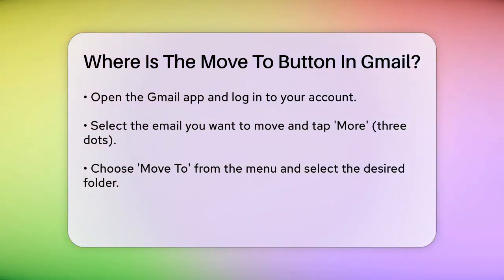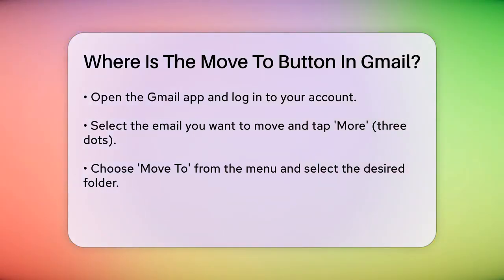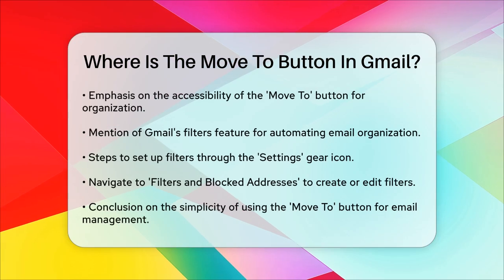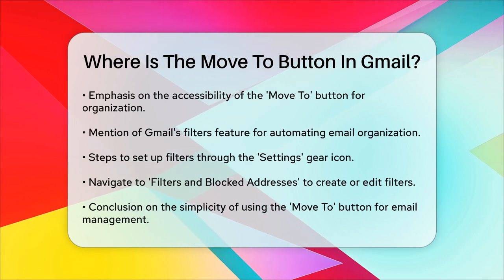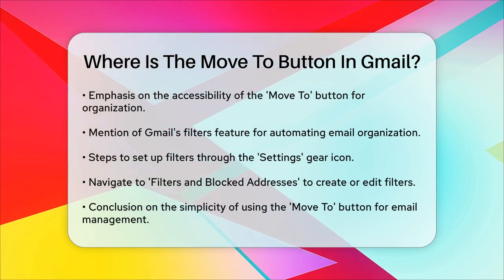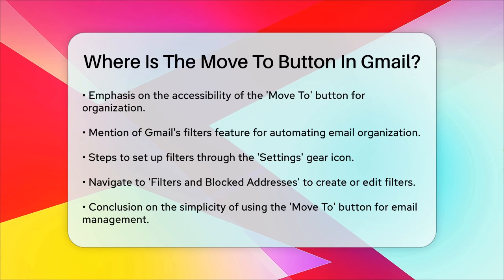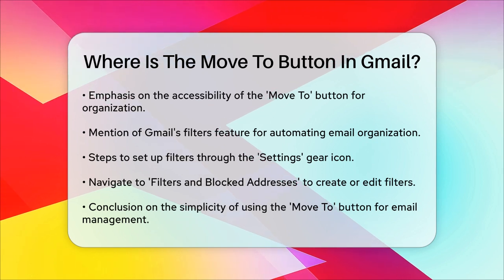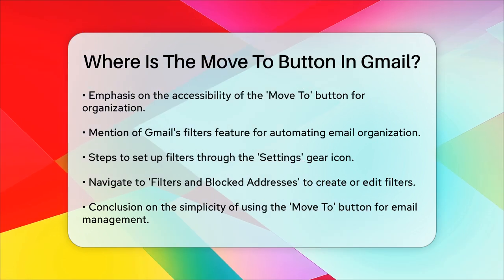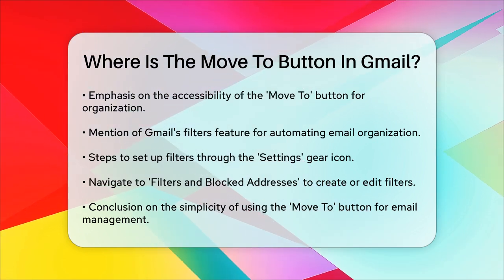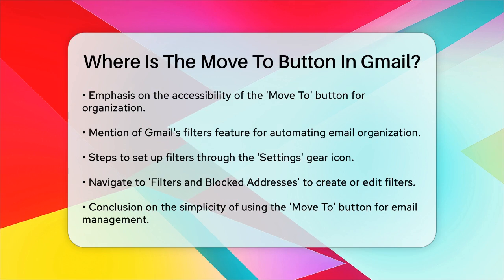Additionally, if you want to automate this process, Gmail offers a feature called Filters. You can set up filters to automatically move emails into specific folders based on criteria like the sender's email address or the content of the email. To do this, go to the Settings gear icon in Gmail, select See All Settings, and then navigate to the Filters and Blocked Addresses tab. Here, you can create or edit filters to automatically organize your emails.